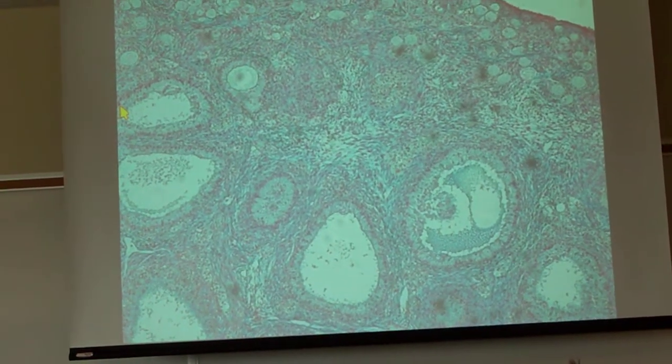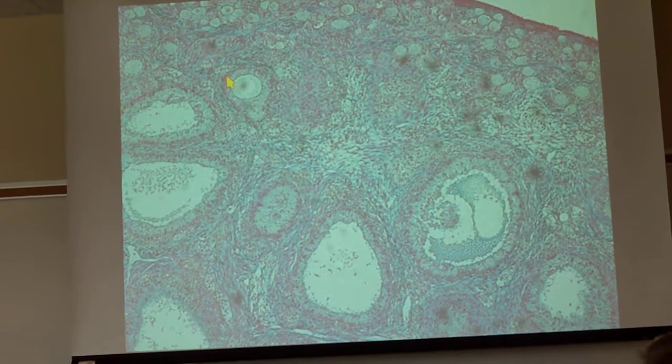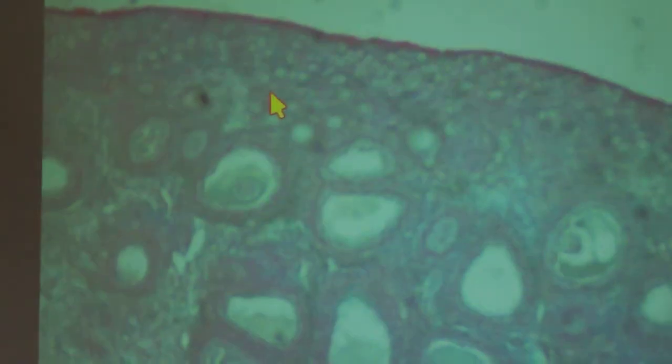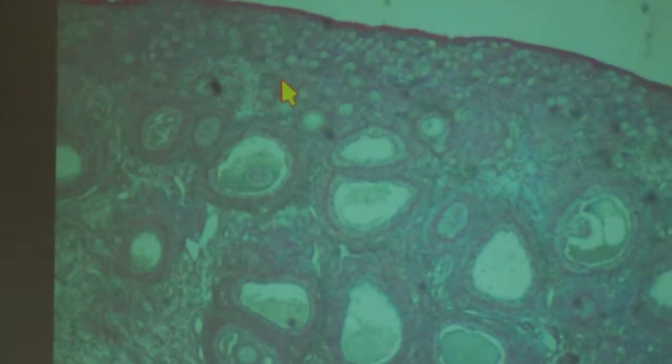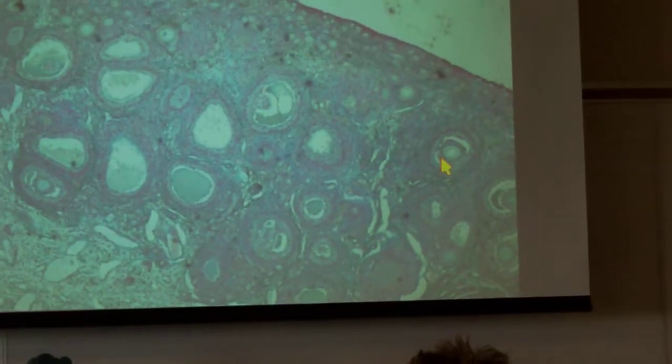Now, what's going to happen is once a woman reaches puberty and begins to release eggs, every month, some of these primordial follicles are going to start to develop. So what happens first, and we don't need to know all these layers, but we're going to go over them. First off, it's going to develop into a primary follicle. From there, it'll develop into a secondary follicle.